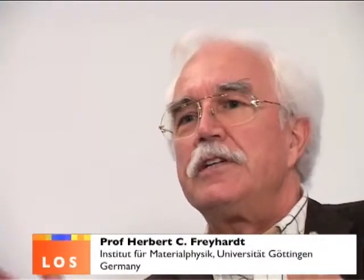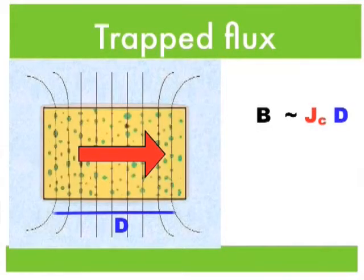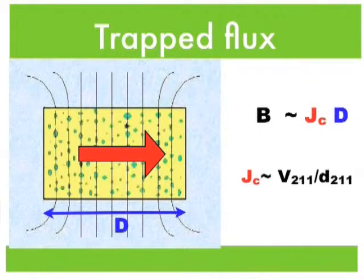For bulk materials, we understand pinning, the defects which are introduced, the 2-1-1 phases. The greater the number of 2-1-1 particles we have and the finer their size, the better the pinning and the bigger the current. There is a slight problem. And the problem is that we're using the 2-1-1 to control the growth process. We're also trying to control the pinning with 2-1-1, and the two things are very different.